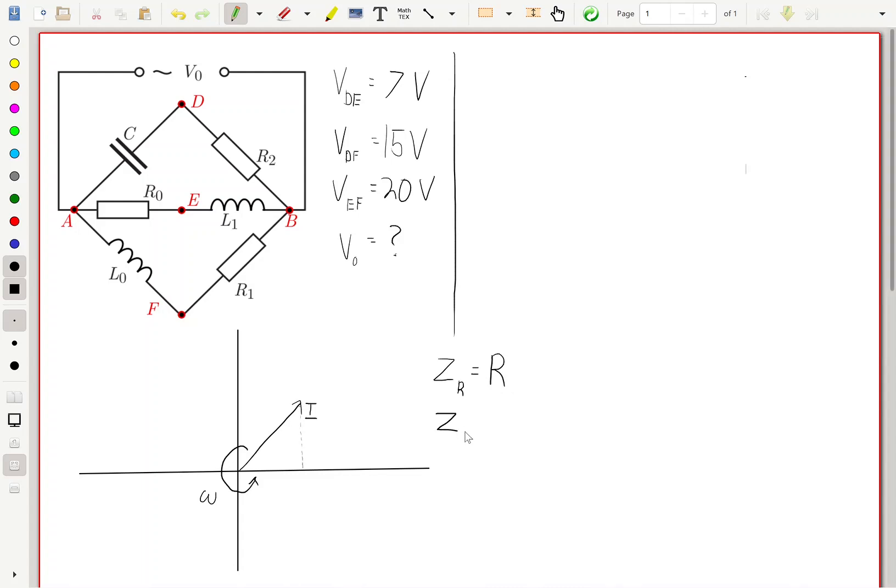But the effective resistance of a capacitor is going to be negative i over omega C, where i is the complex imaginary number, the square root of negative 1. And the impedance of an inductor is going to be i omega L.